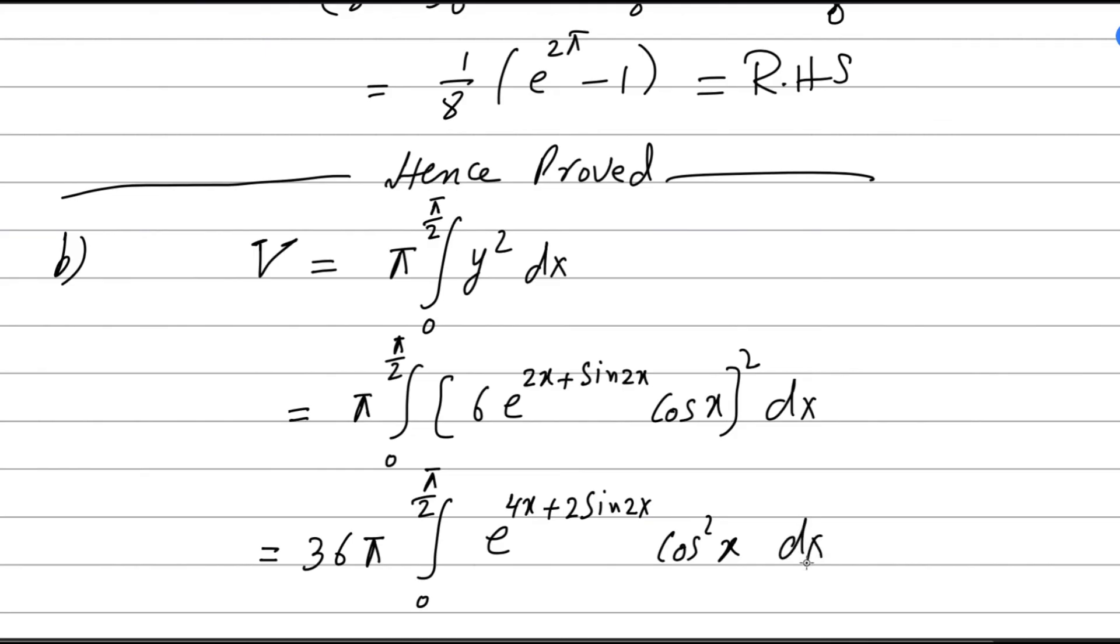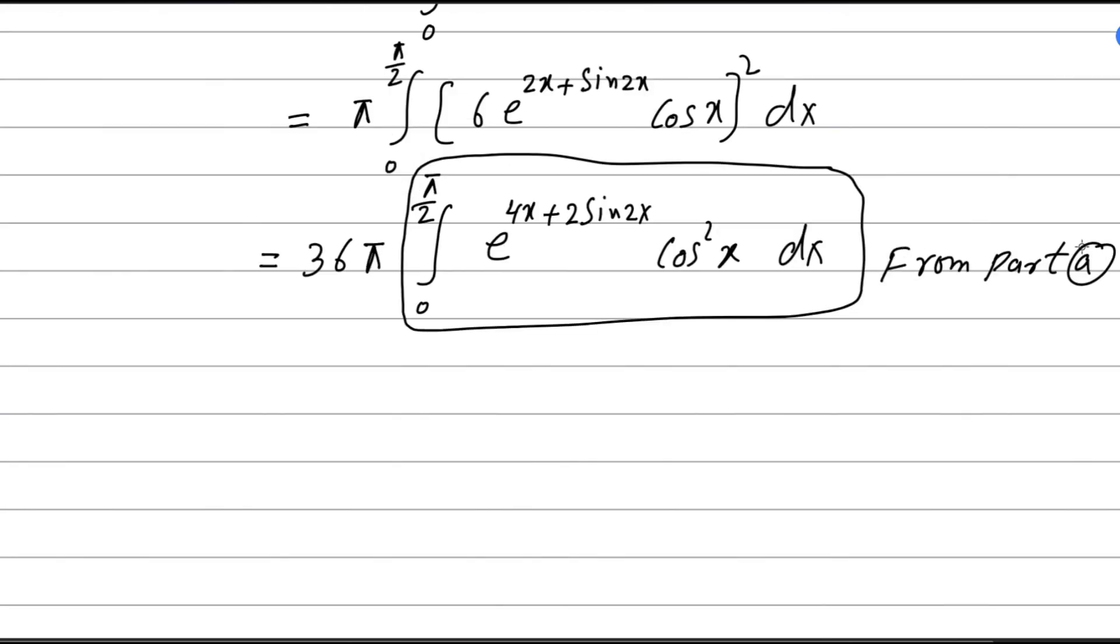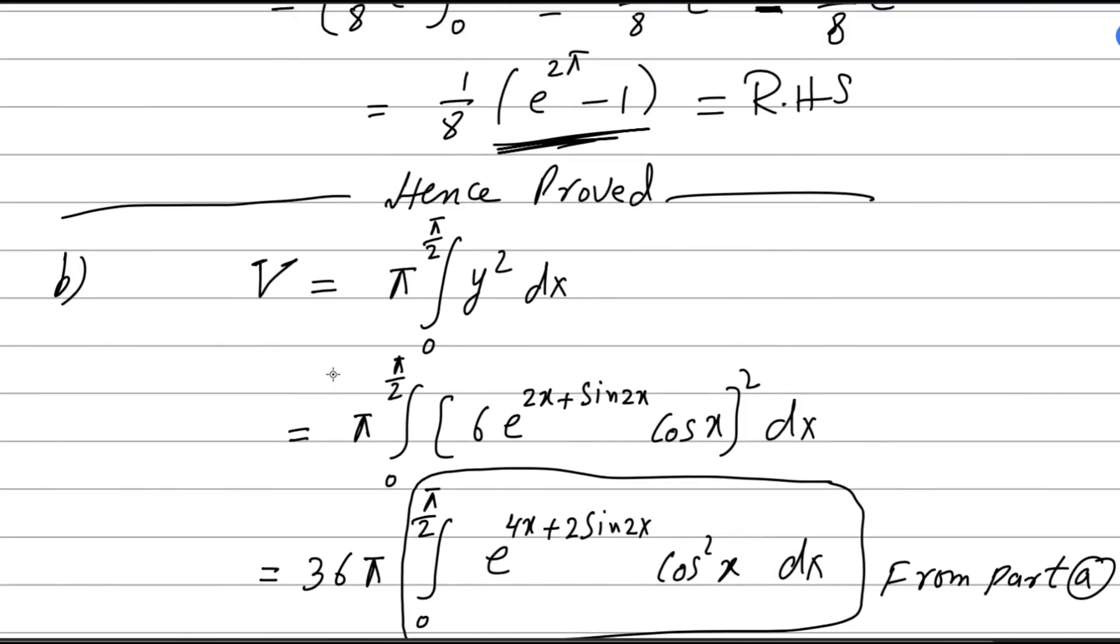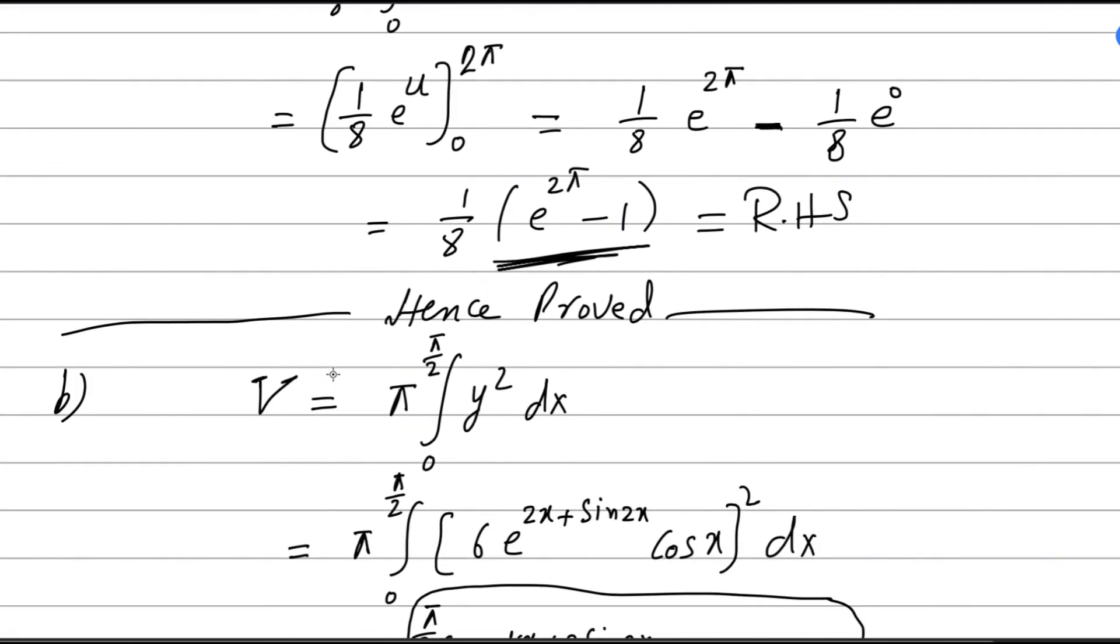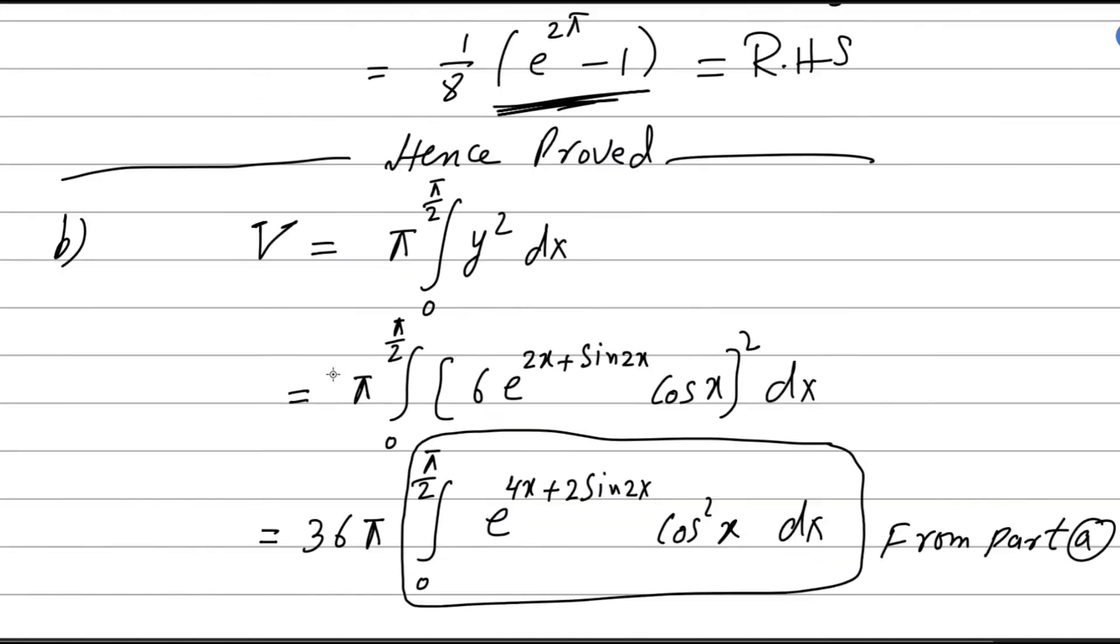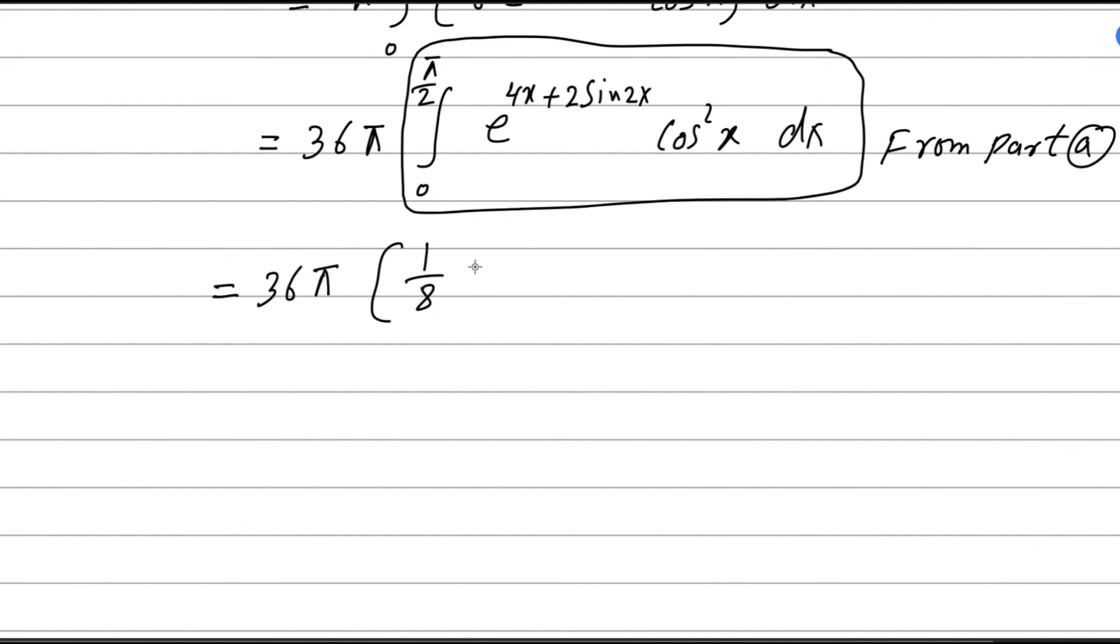Fortunately it is the same thing what we obtained in the previous part, from part (a). So it's 36π, and you can use that value, the integration of that. So it is 36π times 1/8 (e to the power 2π minus 1). 36 and 8 simplify, so it will be 9π/2 times (e to the power 2π minus 1). So this is the volume for one rotation.